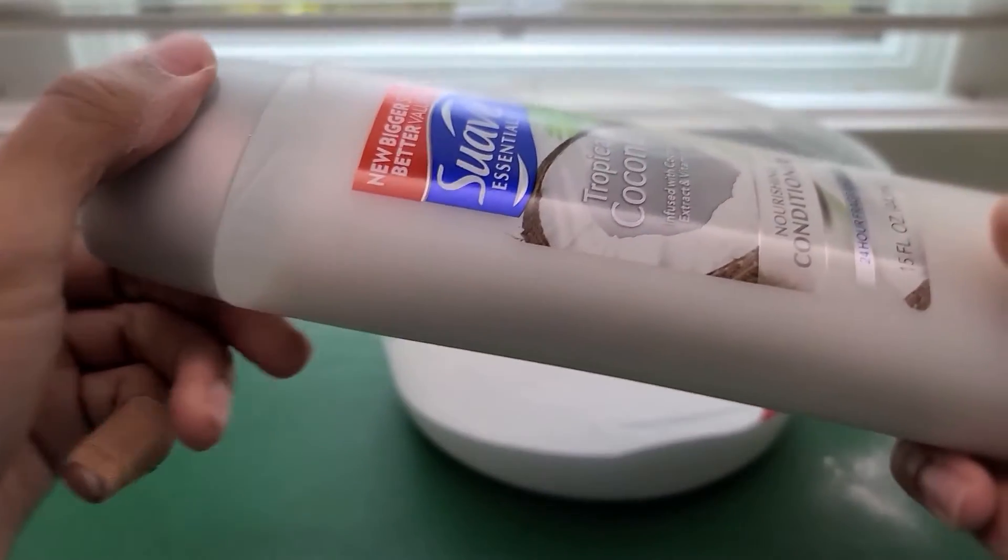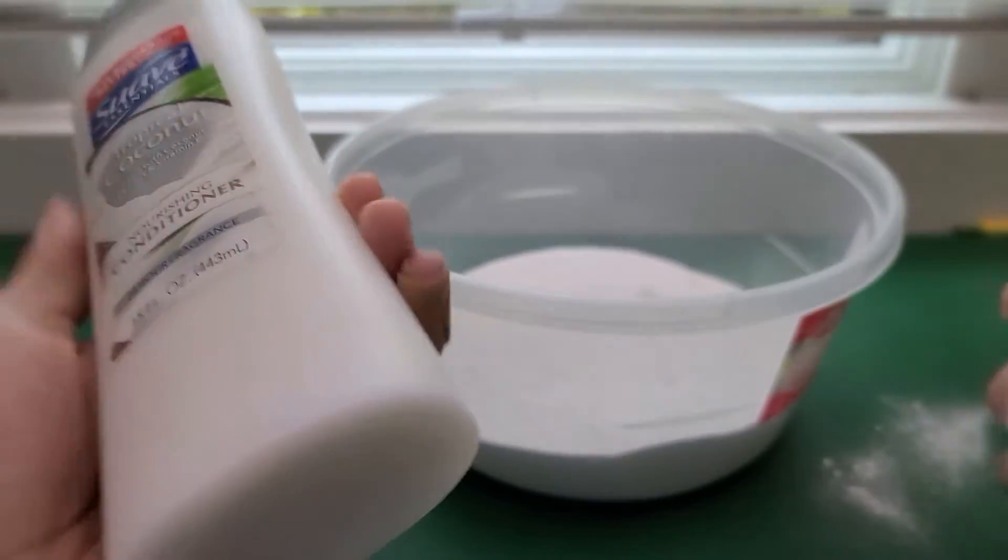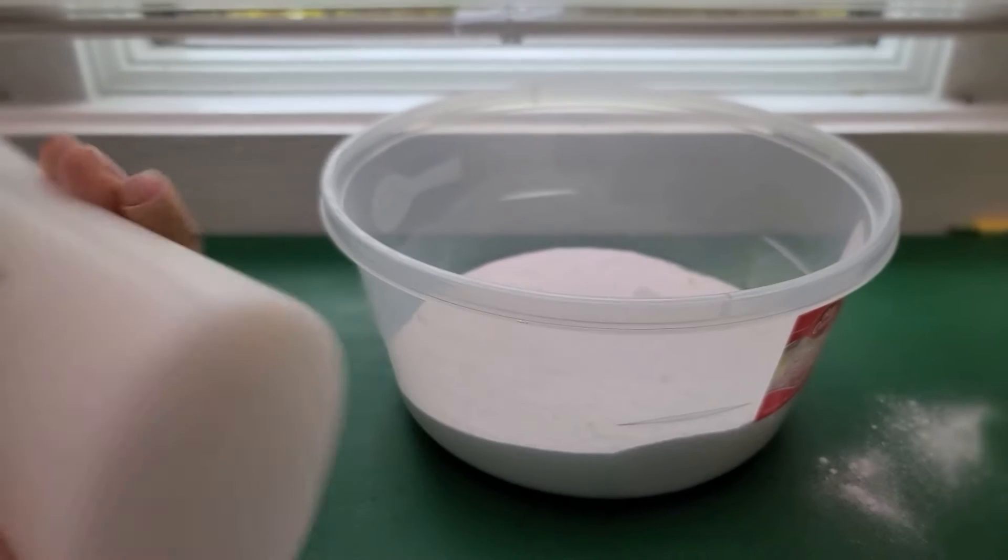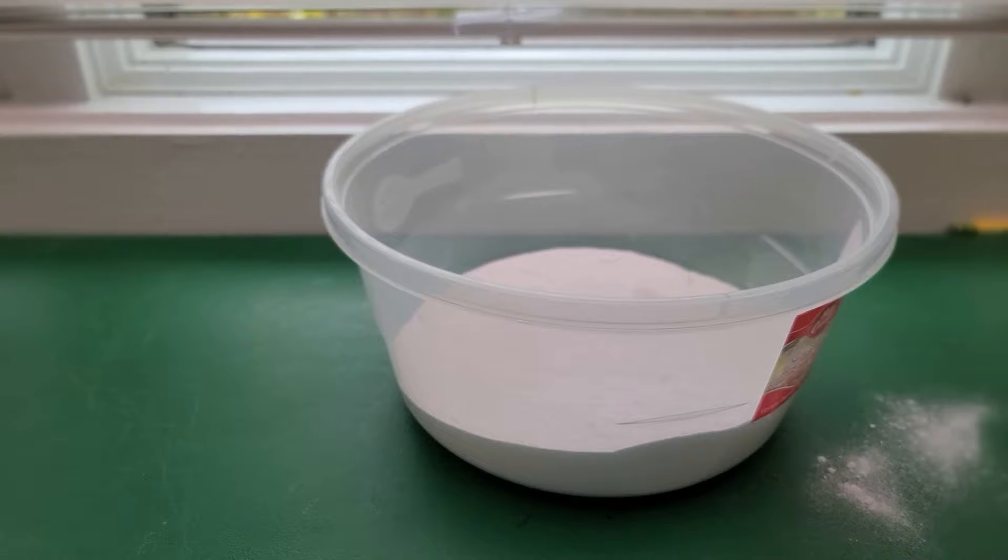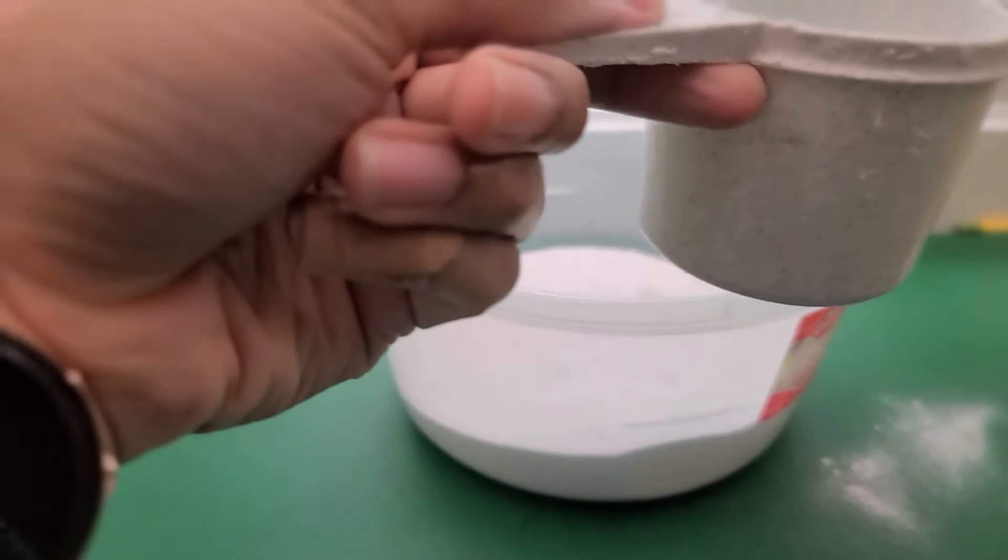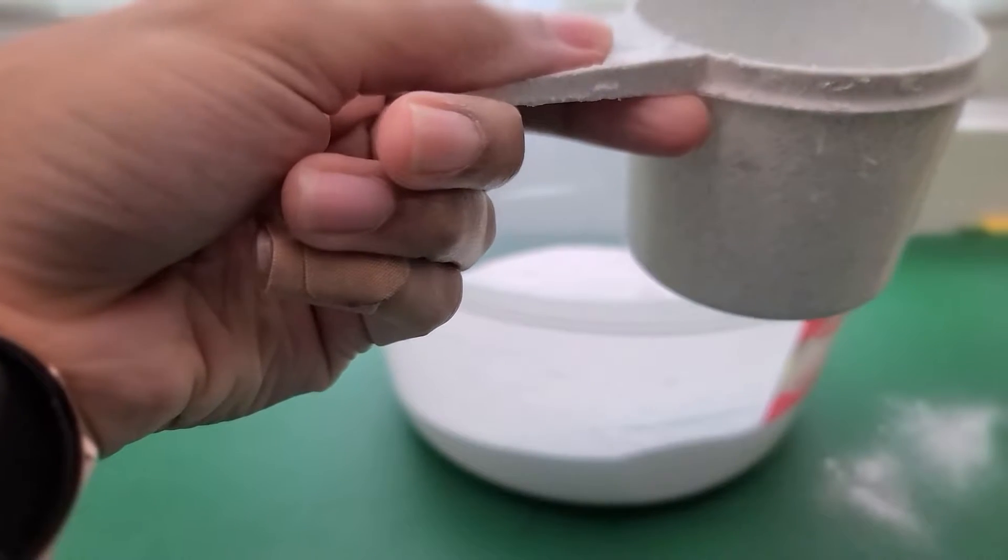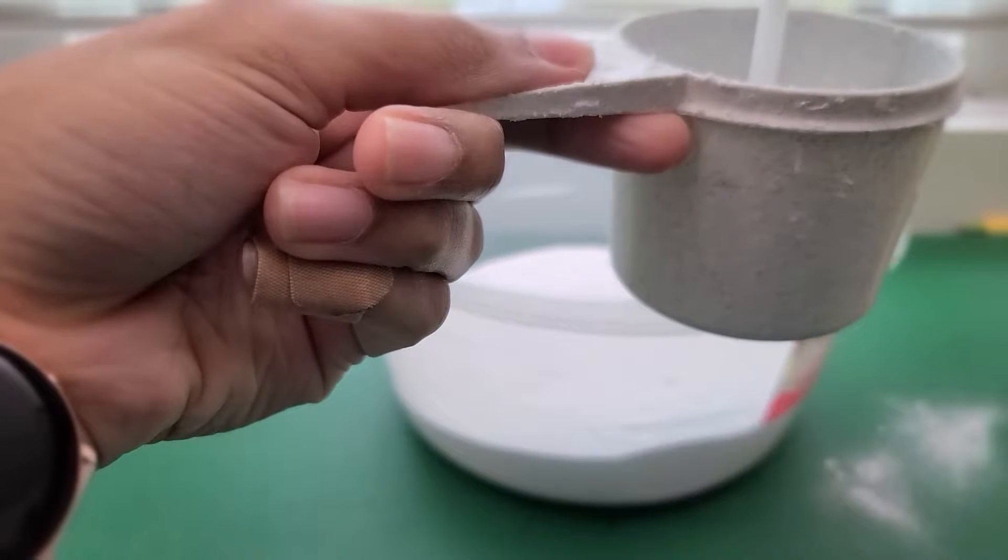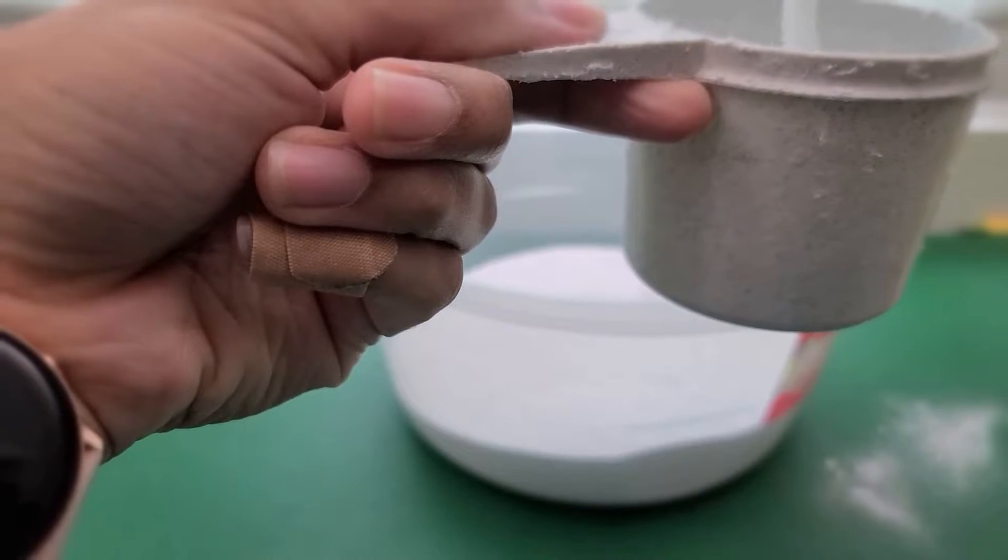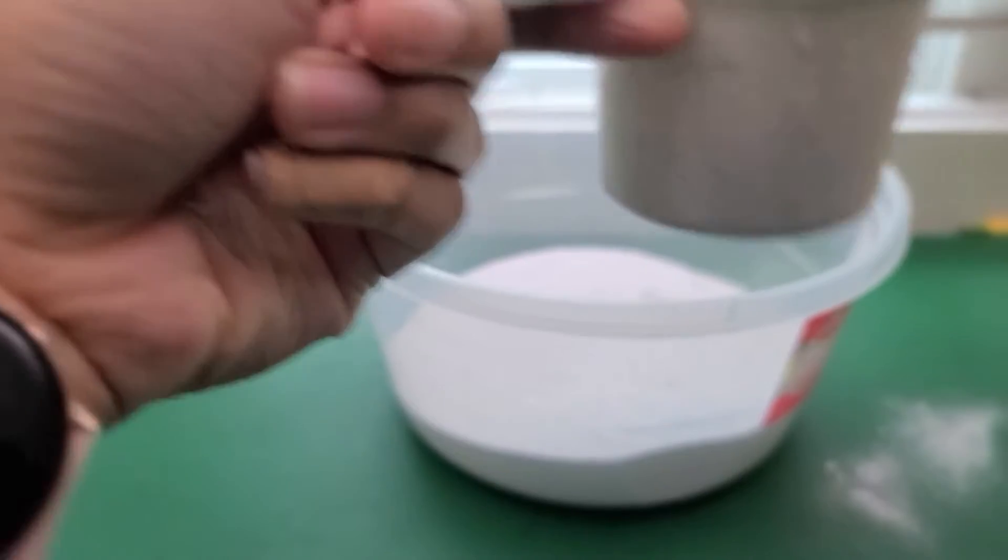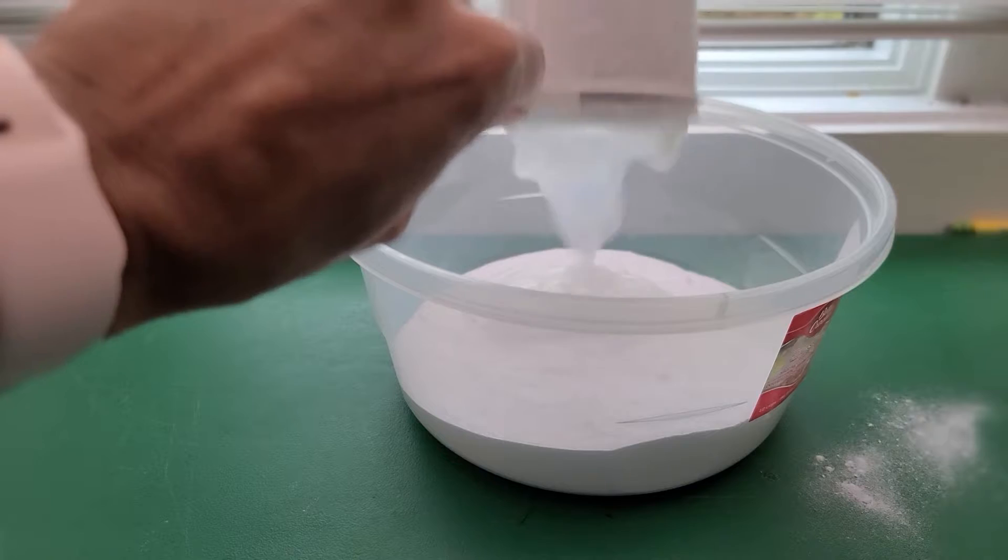Now next what we're going to do is add in half a cup of hair conditioner. You can get any hair conditioner. The best kind to use is a white one just so that your snow is also white, but if you want to have color you can get some color conditioner. So I'm going to measure out about half a cup of conditioner.